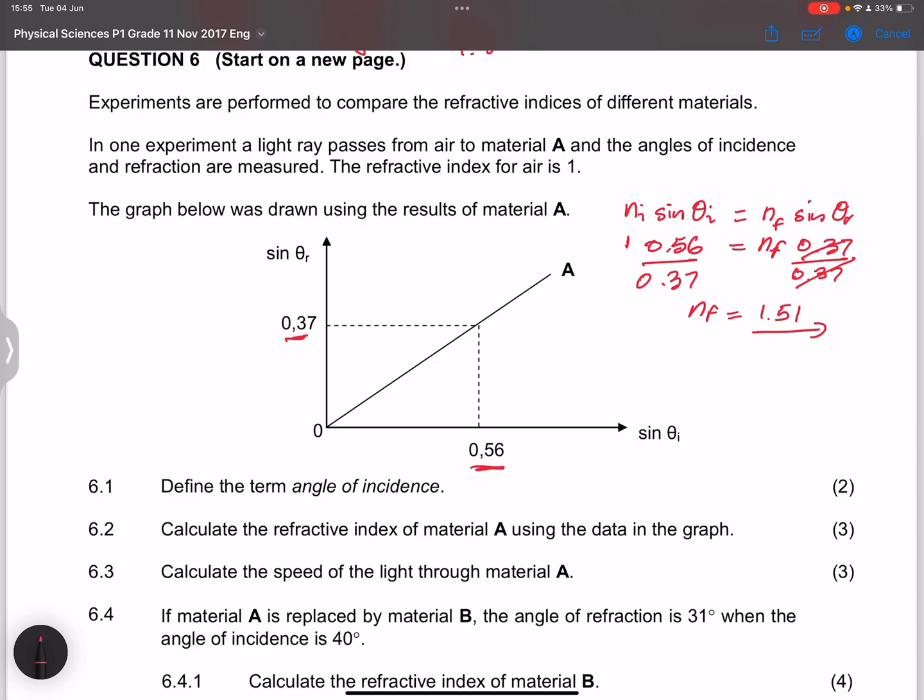And what you also could have done is just to take the gradient of the graph. And what then you do with that gradient is that you can take the gradient and say, well, you know that the gradient will be 1 over the refractive index. And so you can find it that way.